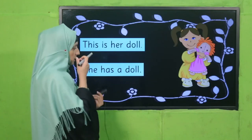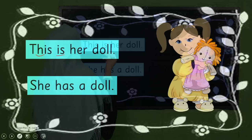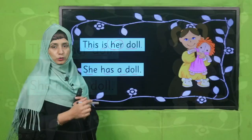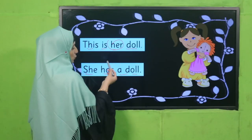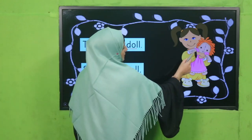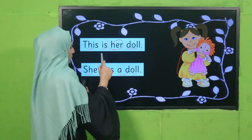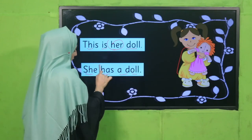Let's look at these examples. 'This is her doll.' Now see: 'She has her doll.' Both sentences have the same meaning and both are showing possession. 'She has her doll' — you can see that 'has' here is showing possession, that she is a girl and she has a doll.